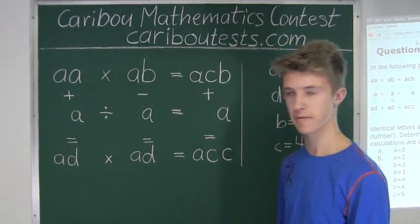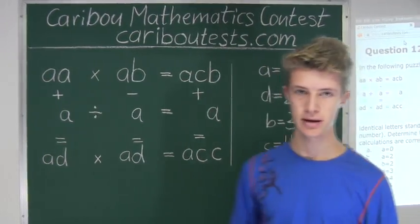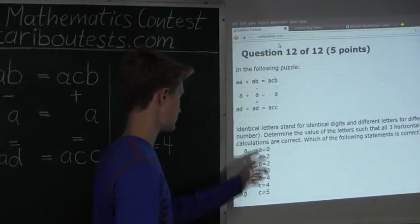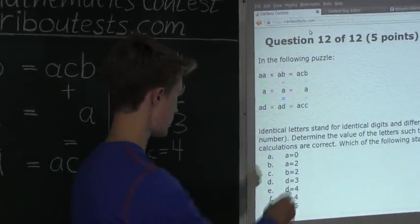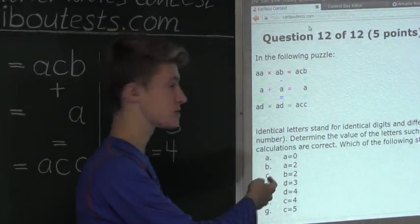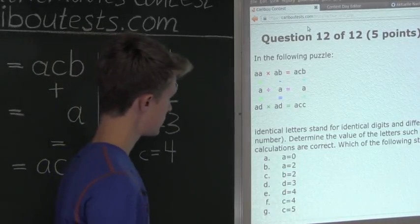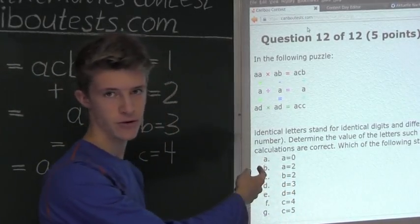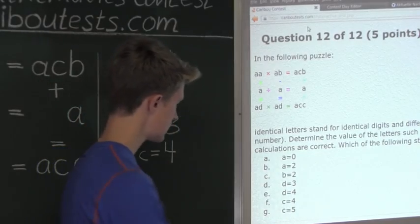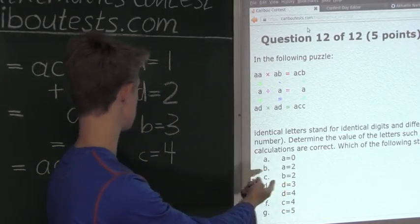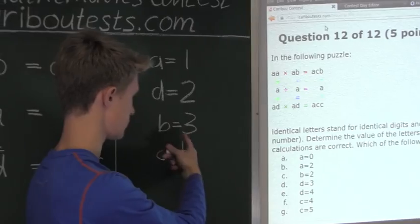Okay, so now we have all the values for all the letters. Now let's look at the possible answers. First, we have A is 0, but that is false because we know A is 1. Then we have A is 2, and that is also false because we know A is 1. Then the next one is B is 2. Well, that is false. We know B is equal to 3.